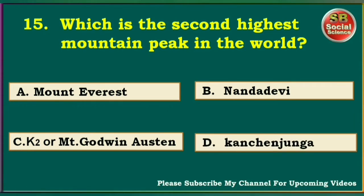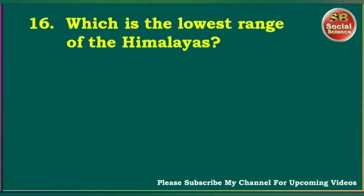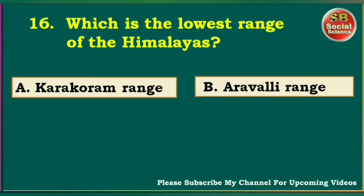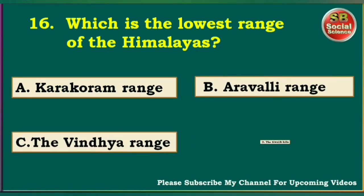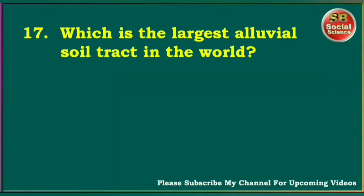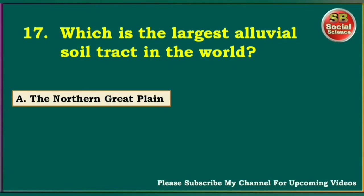Which is the lowest range of the Himalayas? Karakoram Range, Aravali Range, the Vindhyas Range, the Shivalik Hills. The right answer is the Shivalik Hills. Which is the largest alluvial soil tract in the world? The Northern Great Plain, the Peninsular Plateau, the Coastal Plains, the Northern Mountains. The answer is the Northern Great Plain.